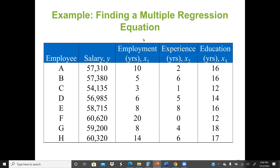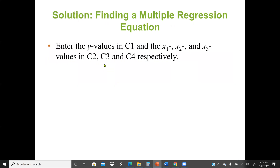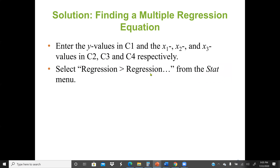The three independent variables are: the length of employment (how long the employee has worked with the company), previous experience in the field before joining the company, and education level. We enter the Y values (salary) into column C1, and the independent variable values S1, S2, S3 into columns C2, C3, C4 respectively.